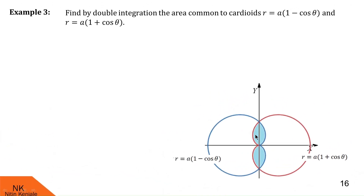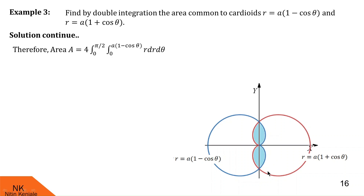Note that this shaded region is symmetric about both the x-axis and y-axis. So it is enough to find the area in the first quadrant and multiply by 4 to get the total area. Area = 4 × double integral of r dr dθ over the first quadrant region. In the first quadrant, r varies from 0 to a(1 − cosθ), and theta varies from 0 to π/2, since the region touches both the positive x-axis and positive y-axis.